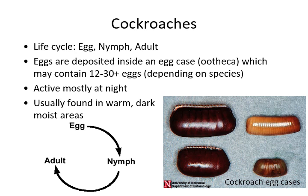Cockroaches in general have what we call a three-stage life cycle: the egg stage, the nymph stage (the immature stage), and the adult stage. The female makes an egg case — we call it an ootheca — and deposits her eggs inside it. It can contain anywhere from 12 to 30-plus eggs depending on the species. You can see pictures of cockroach egg cases from different species on the right.